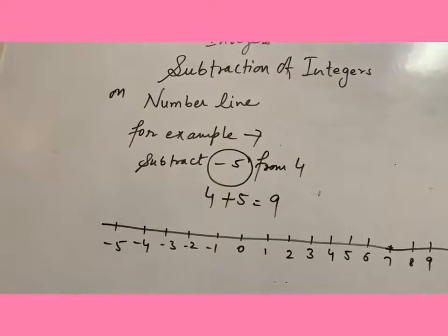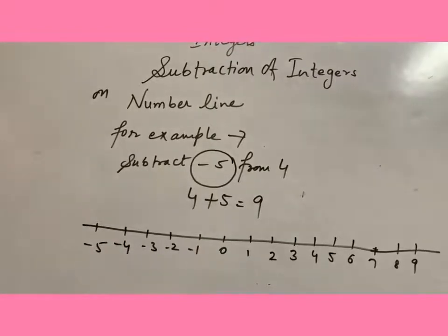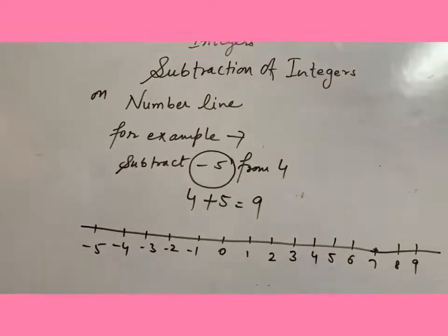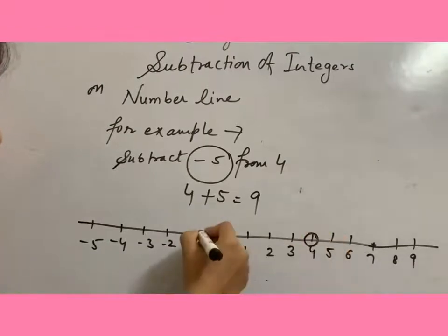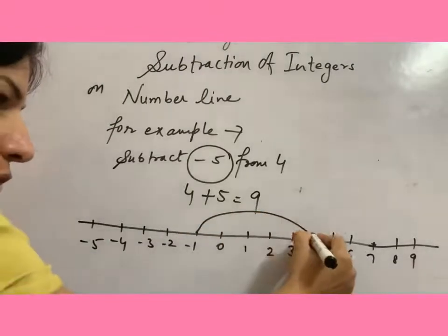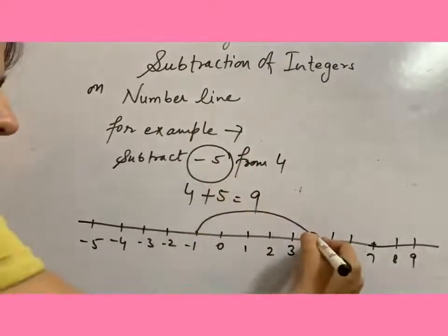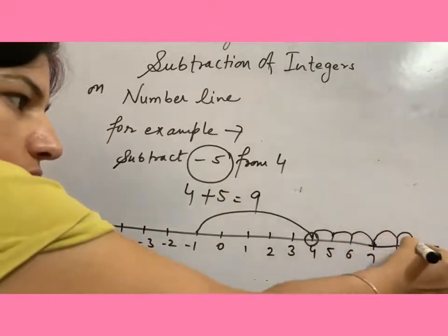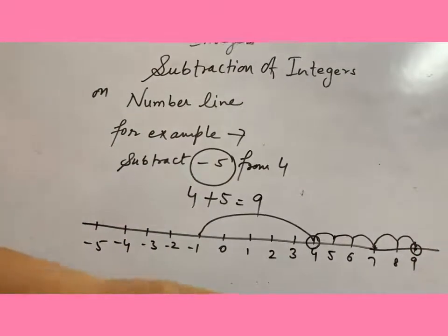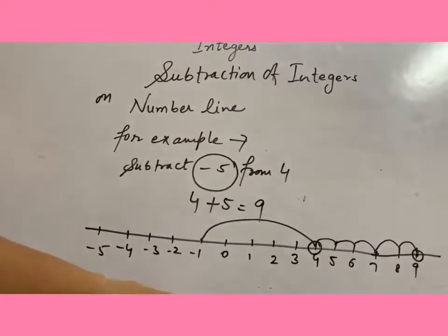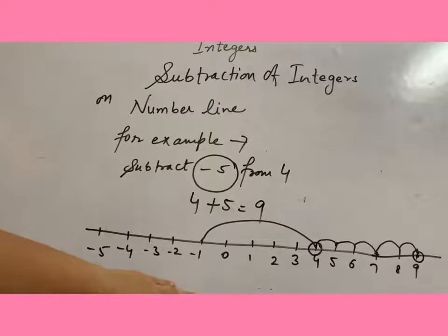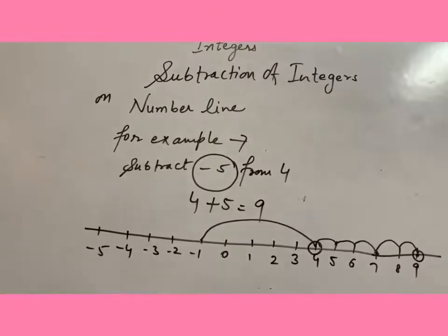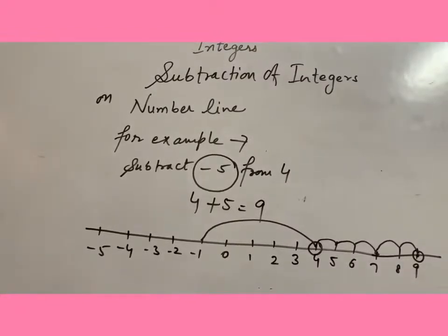Okay, so there is 4, positive 4 here, and we have to just move forward 5 steps: 1, 2, 3, 4, 5. So this is the way to show subtraction of integers on number line. I hope you all understood.